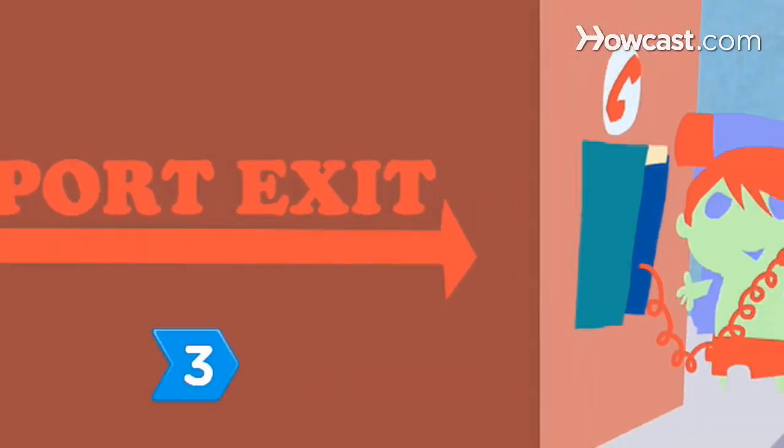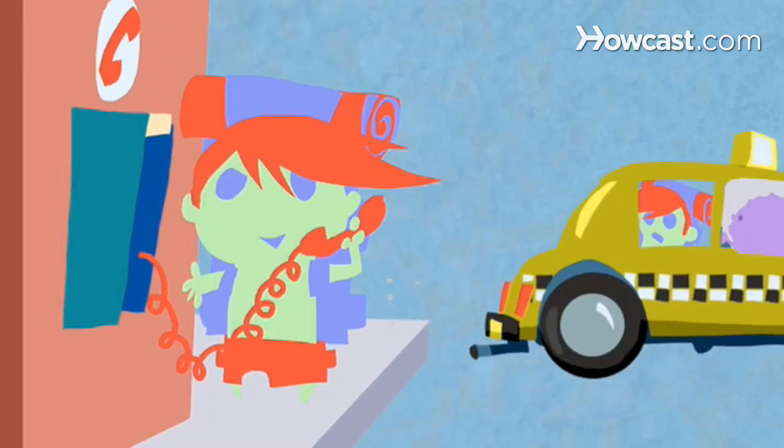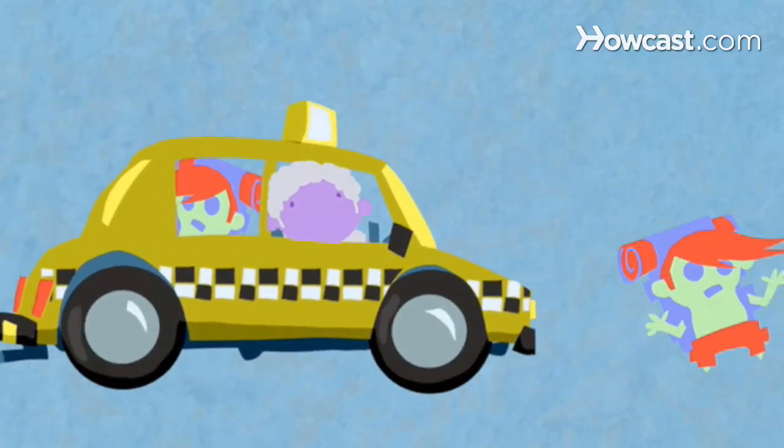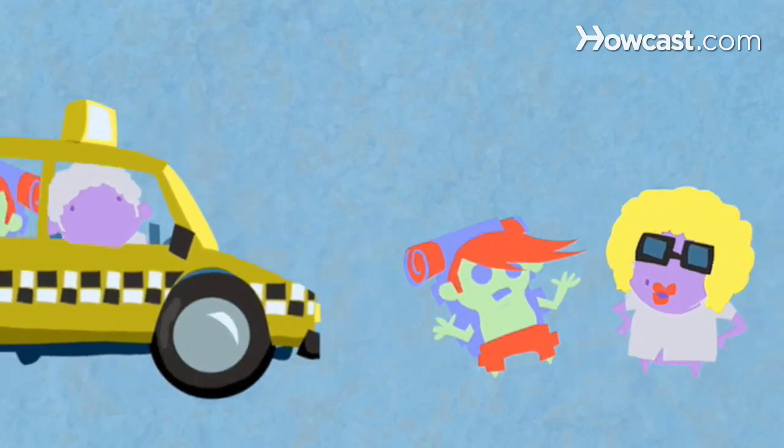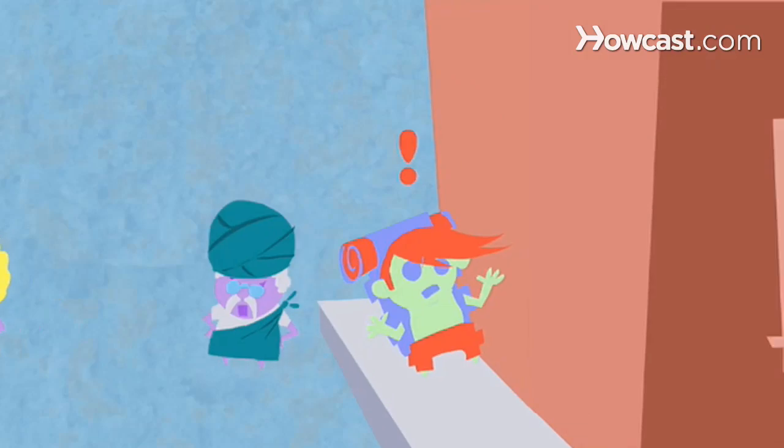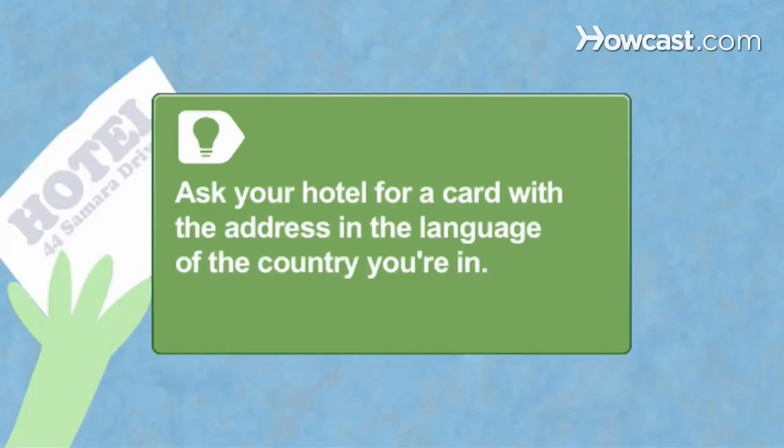Step 3: Before you take a taxi to your hotel from the airport, train, or bus station, call the front desk and ask what the approximate fee should be and what kind of tip is customary, if any. Once at your destination, rely on locals to give you ballpark estimates of reasonable rates to get around town. Ask your hotel for a card with the address in the language of the country you're in to make future rides easier.